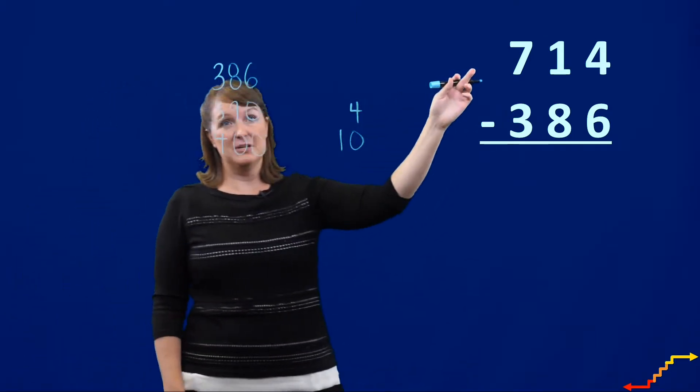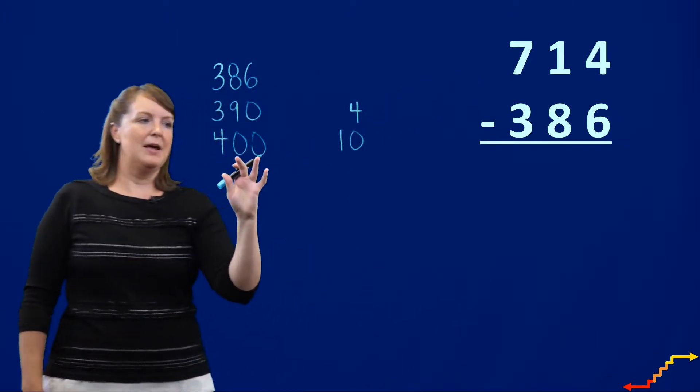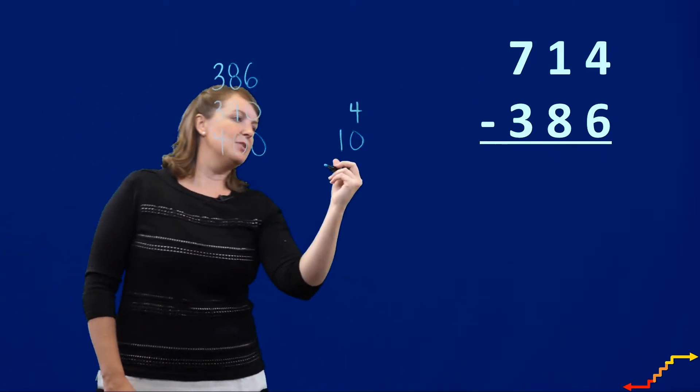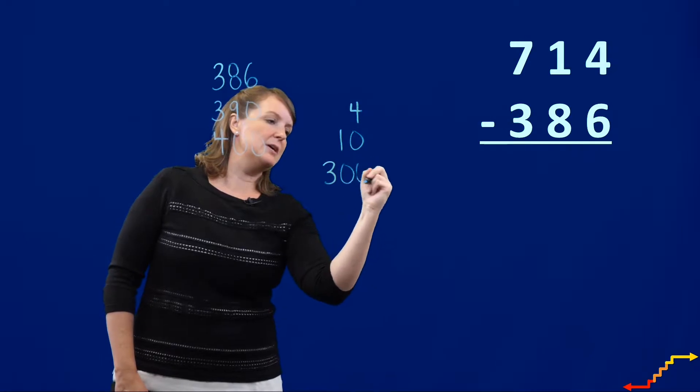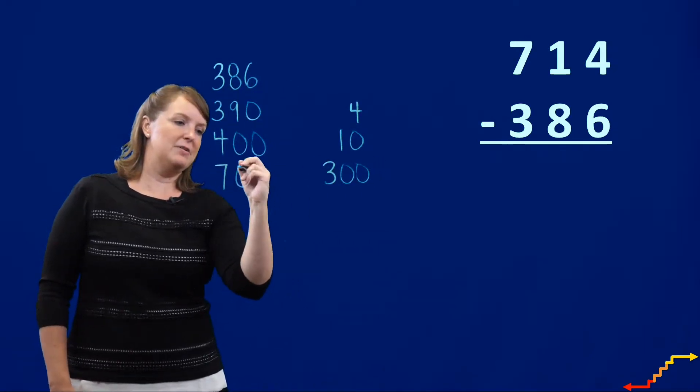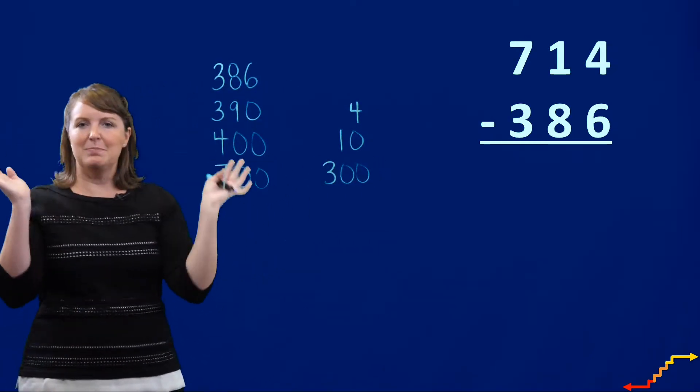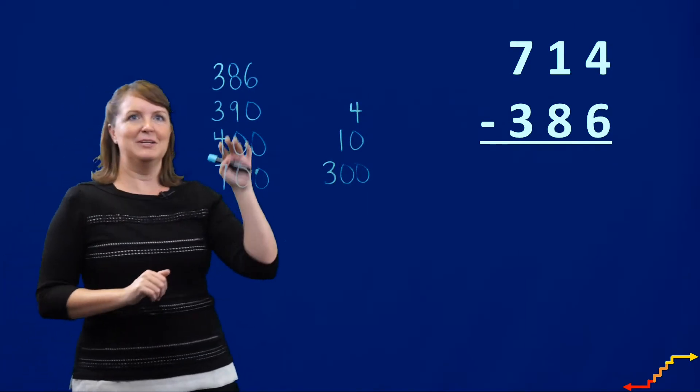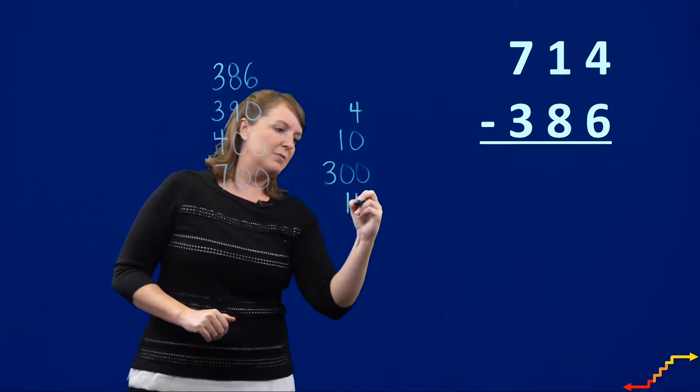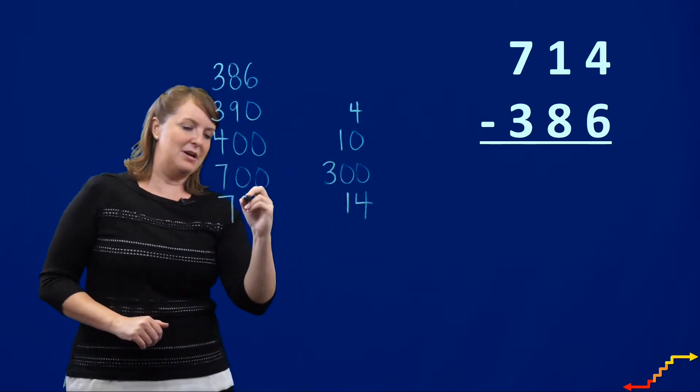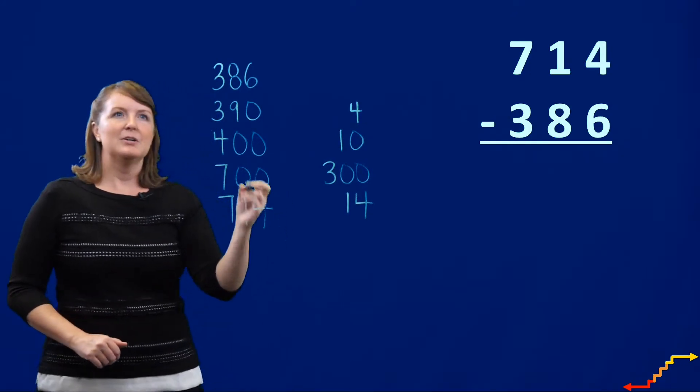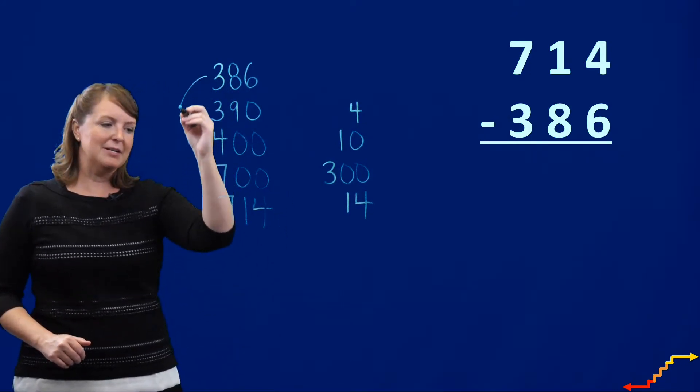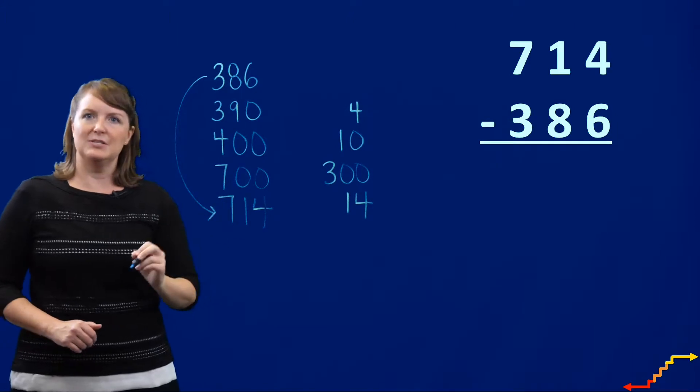Remember, I'm trying to get to 714. Let's see, 400 plus 300 gets us to 700. And I might just bite it off all right now. Let's see, 700 plus 14 is 714. So I started with 386, and I counted up to 714.